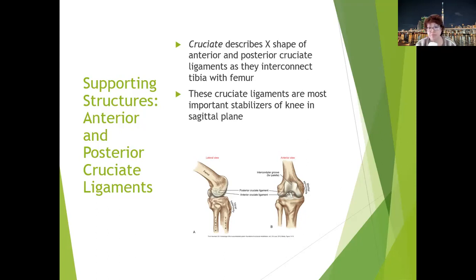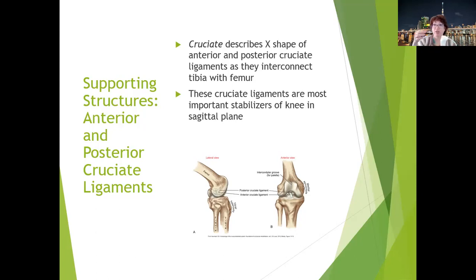One test for cruciate ligament integrity is the anterior drawer test — the tibia is the drawer. When the tibia moves forward, you're pulling out the drawer and stretching the ACL. When you push the tibia back, you're pushing in the drawer and putting the ACL on slack. The anterior cruciate ligament resists anterior translation of the tibia relative to a fixed femur in open chain.